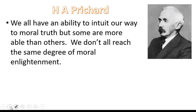According to Pritchard, we all have an ability to intuit our way — to use that innate ability — to moral truth. But some of us are more able than others; we are not all morally enlightened to the same degree, and that's why people might reach different decisions. Not because there are no universal truths out there, but because we don't all have the same ability to use that innate reasoning. That's very similar to Moore — it's the same as Moore.